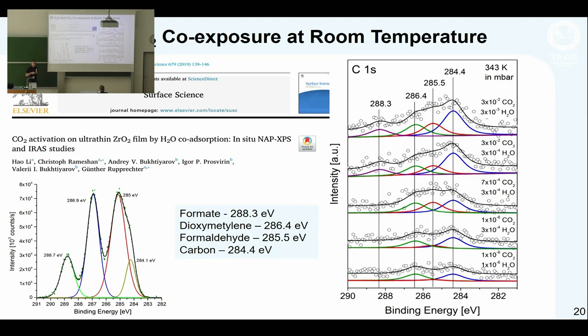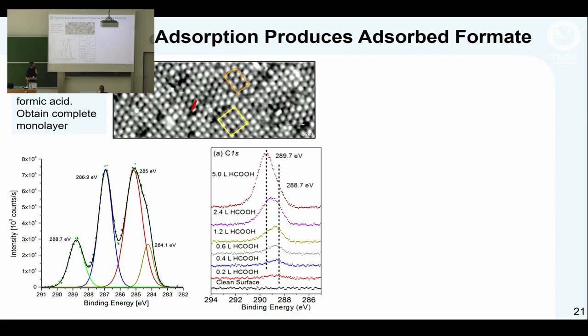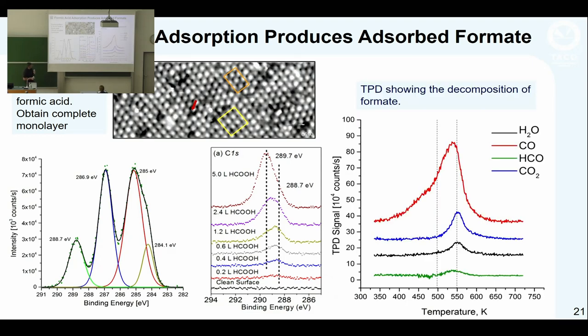This peak from formate is interesting because we can make it by depositing formic acid onto the surface, which absorbs dissociatively making adsorbed formate. We get an adsorbed monolayer of formate. We can look at decomposition by doing TPD. What we see is formate decomposition gives water, CO, HCO, and CO2 - again, no hydrogen. Even this alternative mechanism gives CO2 which we're after, but doesn't look like it'll produce hydrogen in the end.